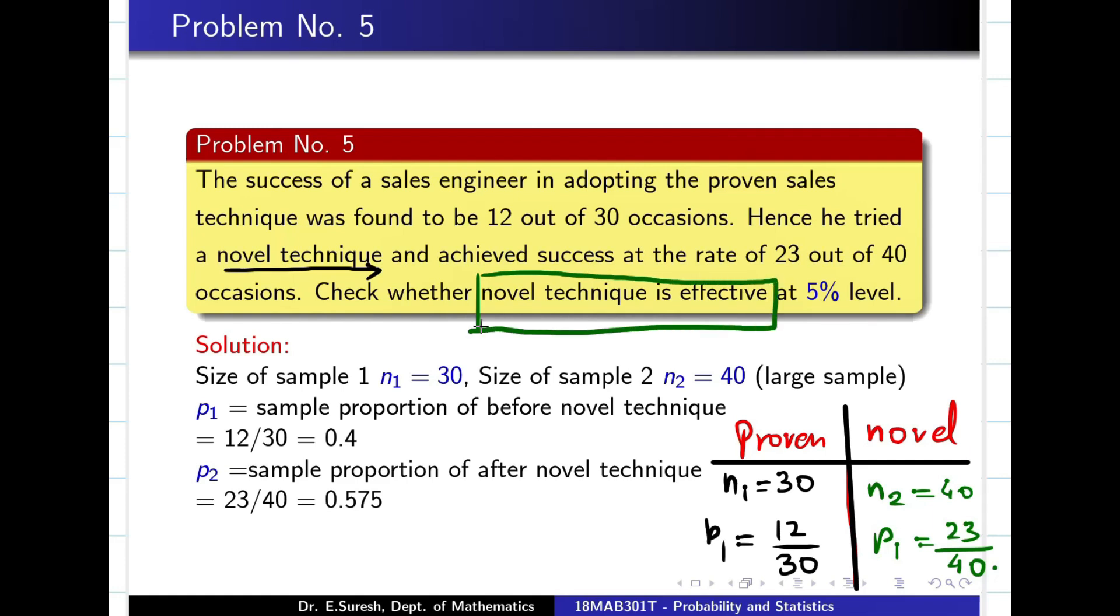In the novel technique, out of 40 times, he succeeds 23 times. Now check whether the novel technique is effective. In the previous problem, they are dealing with defect. In this problem, they are dealing with performance. They are asking, novel technique is effective. That means novel technique is better. So my H0, I say, both techniques are same. H1 says P1 represents the proportion for proven technique, P2 represents the performance for novel technique. We have to check the novel technique is effective or not. Effective in the sense, novel technique is better than proven technique. So it is going to be one-tail test. Hope you understand.